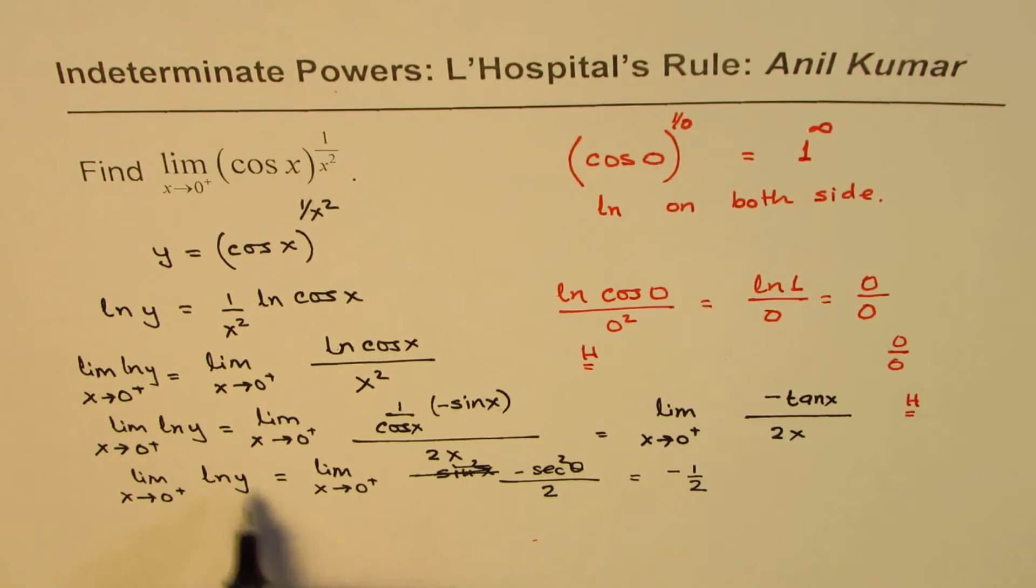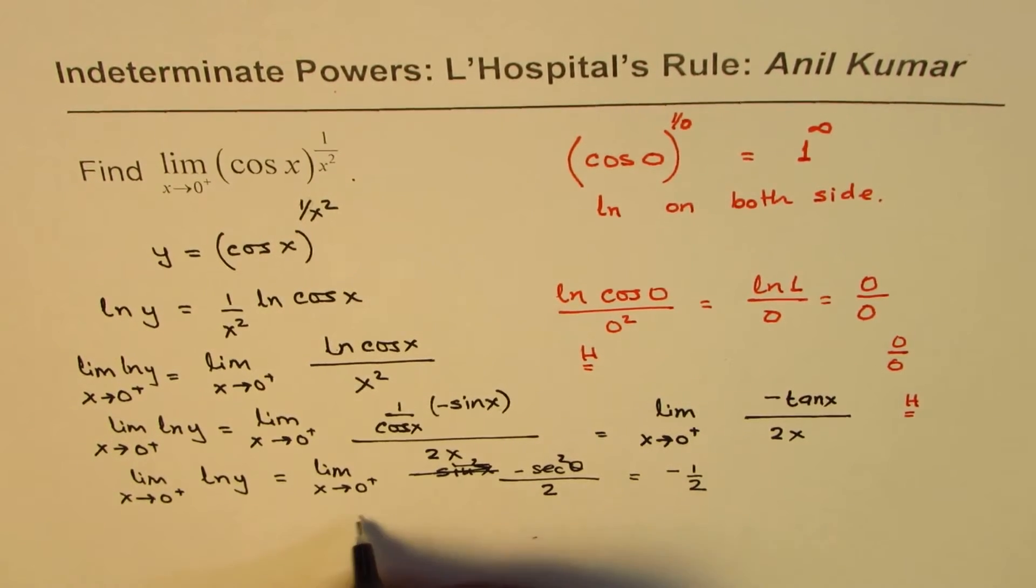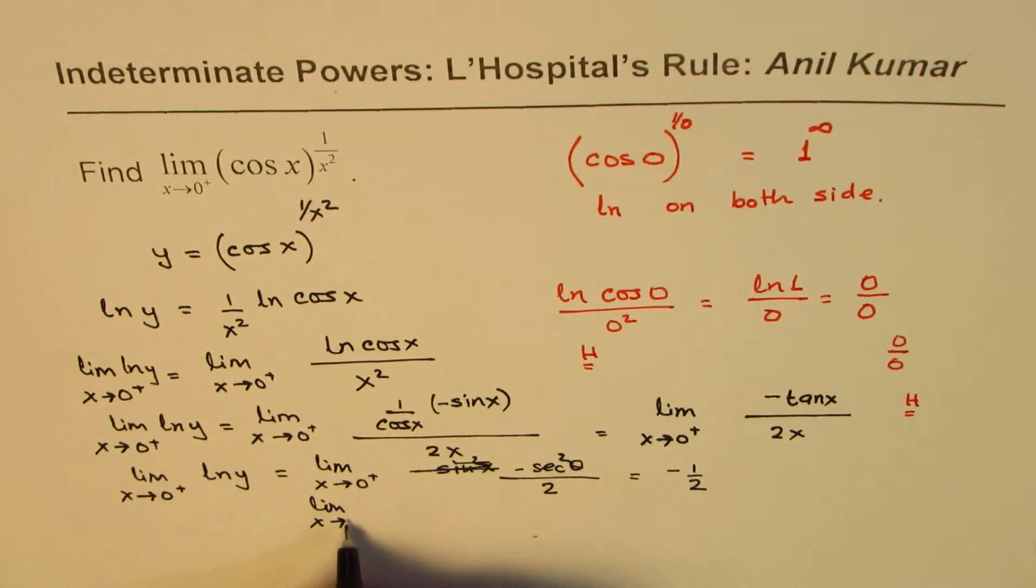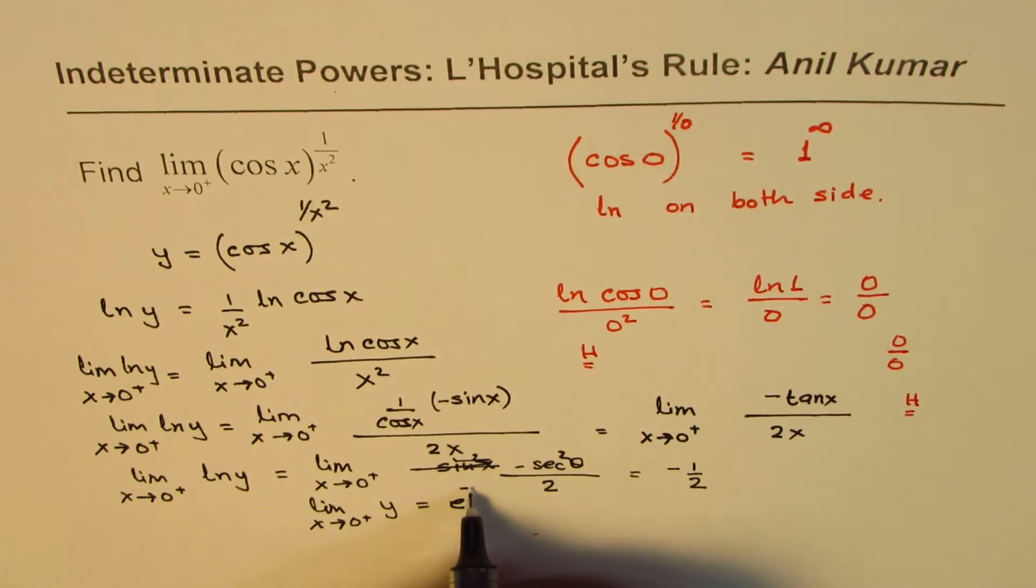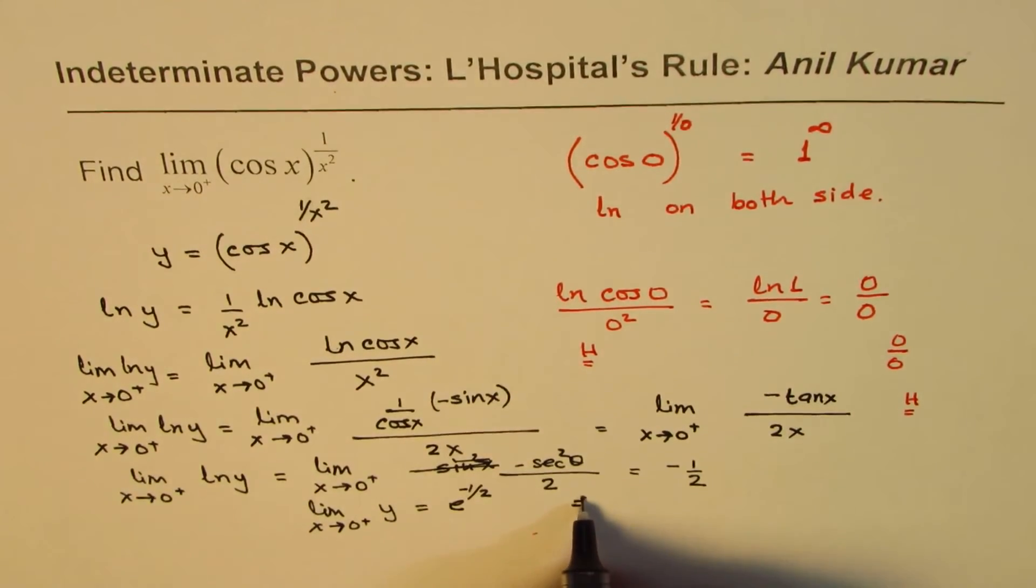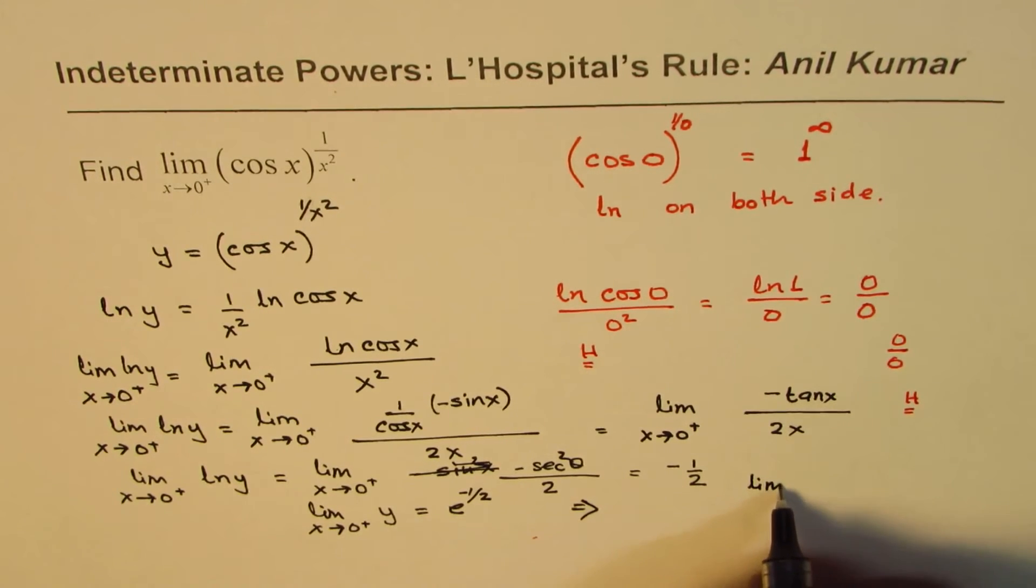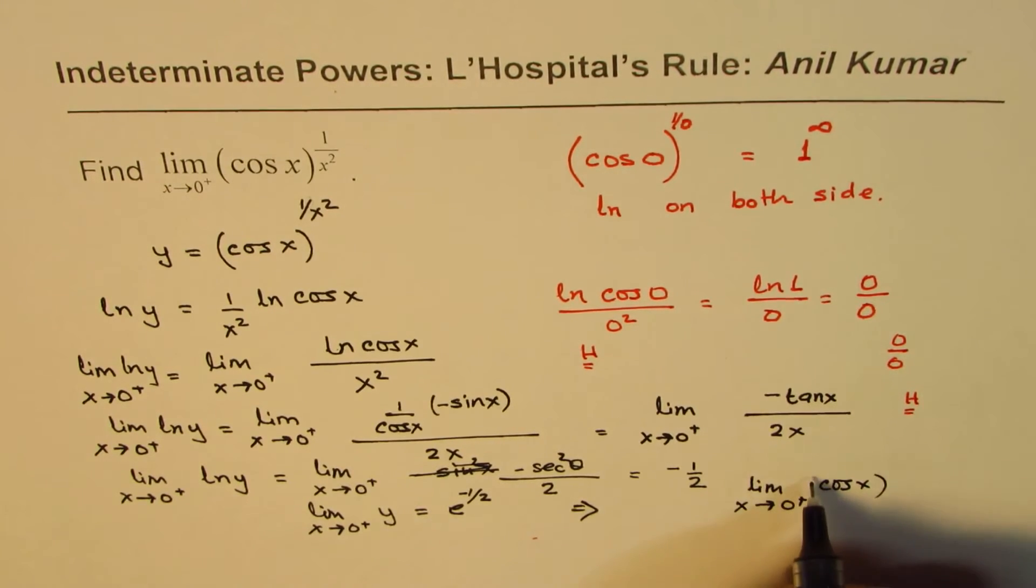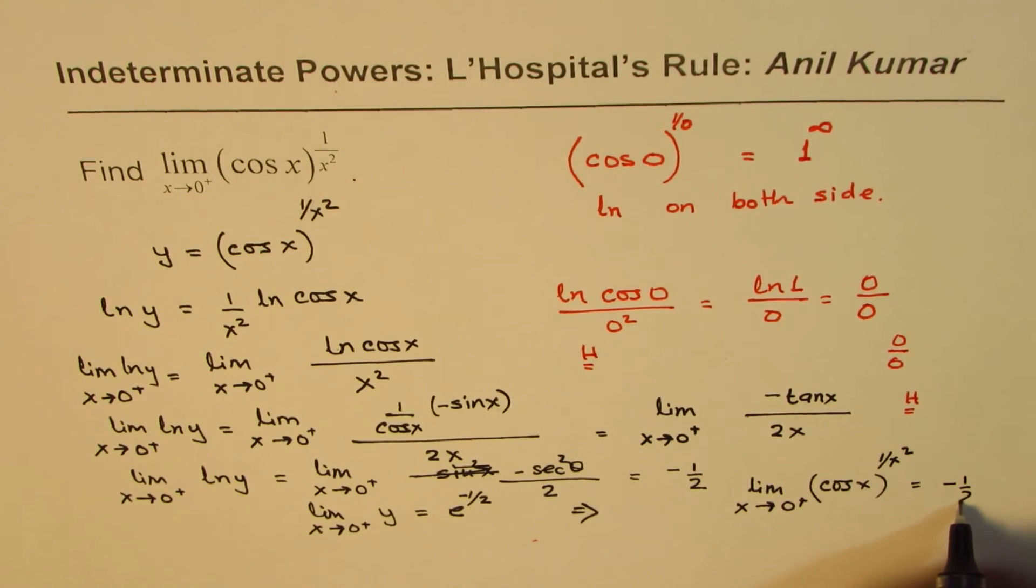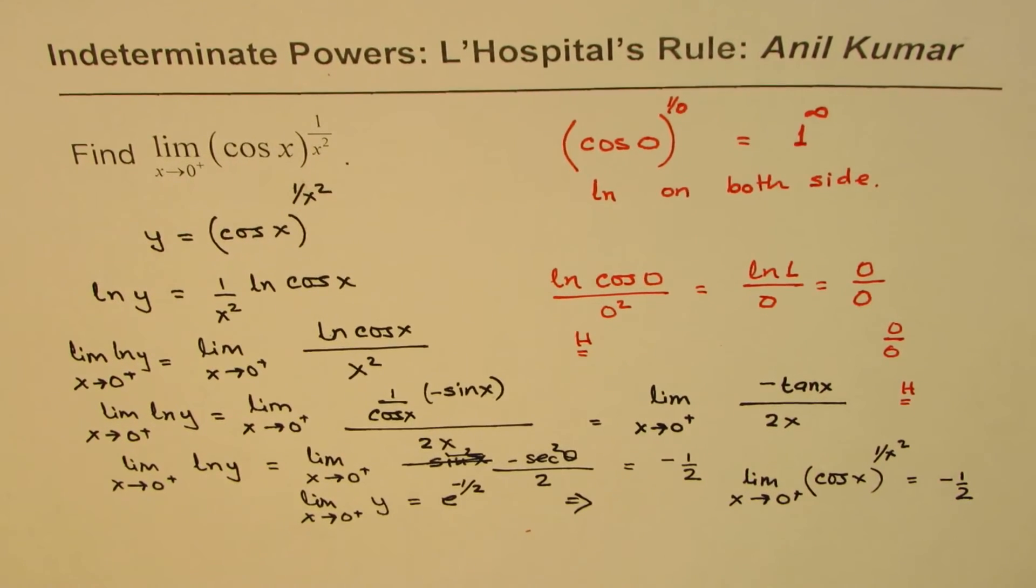So what is the limit for y? It is e to the power of minus half. So we can write limit x approaches 0 from the right side for y is e to the power of minus half. Now y is your function, which we defined here. So this implies, let me write down here now, limit of x approaching 0 from the right side for cos x to the power of 1 over x squared is equal to e to the power of minus half. So that is how you can find the limit for such questions.